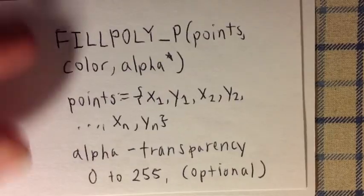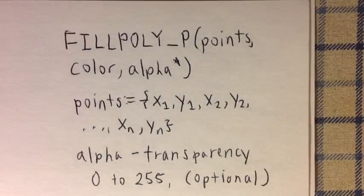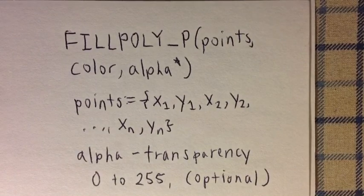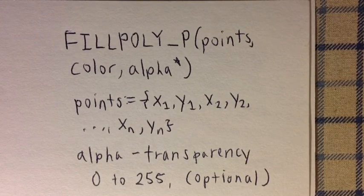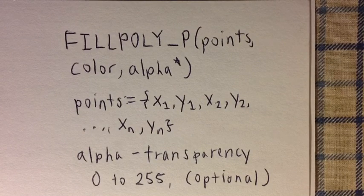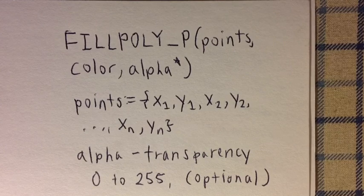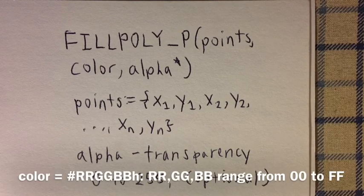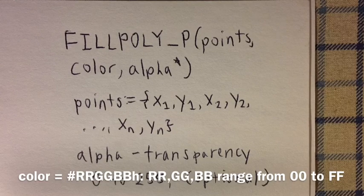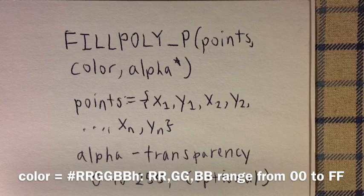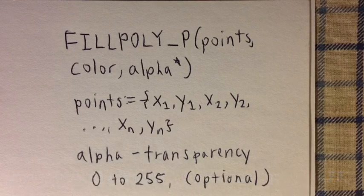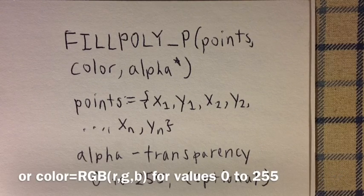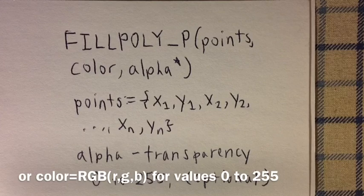The other two arguments for FILLPOLY are color and alpha. Color is the designated color that's going to fill your polygon. Color is satisfied by either typing in a six digit hexadecimal value or you could use the RGB command: red, green, blue.